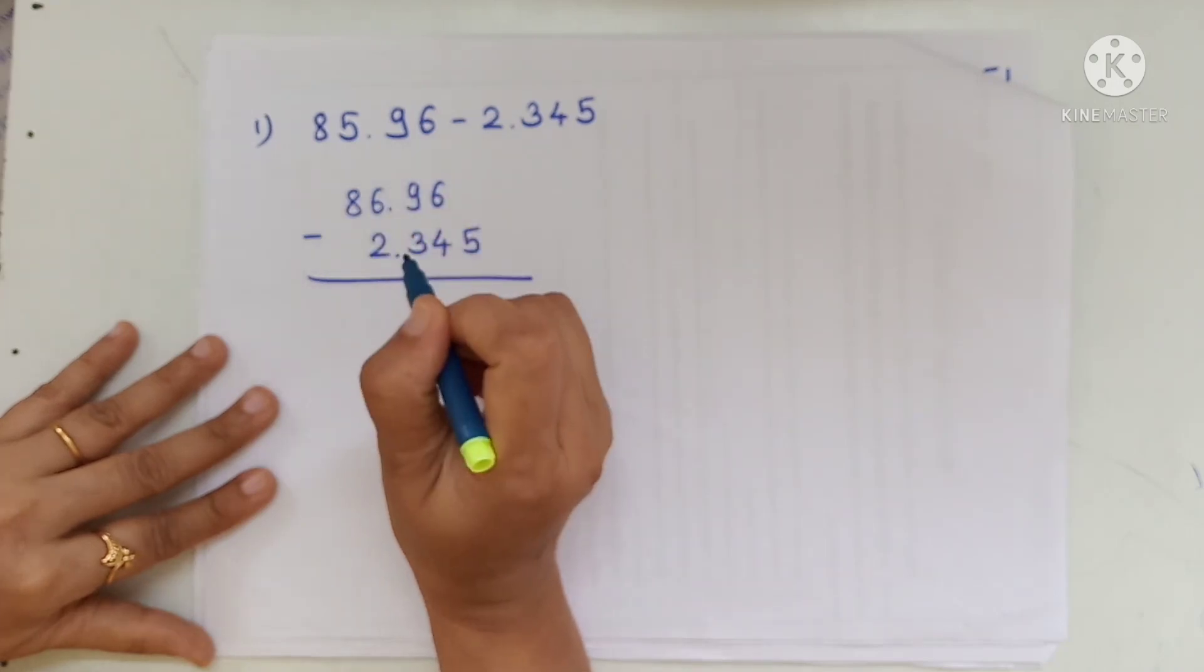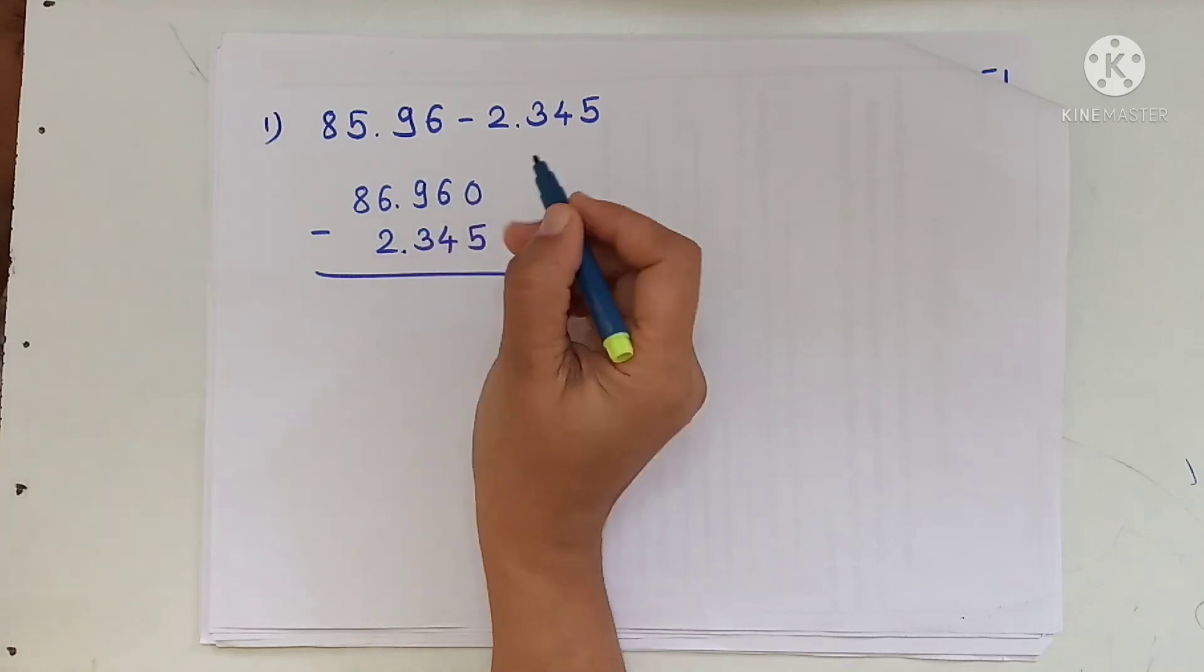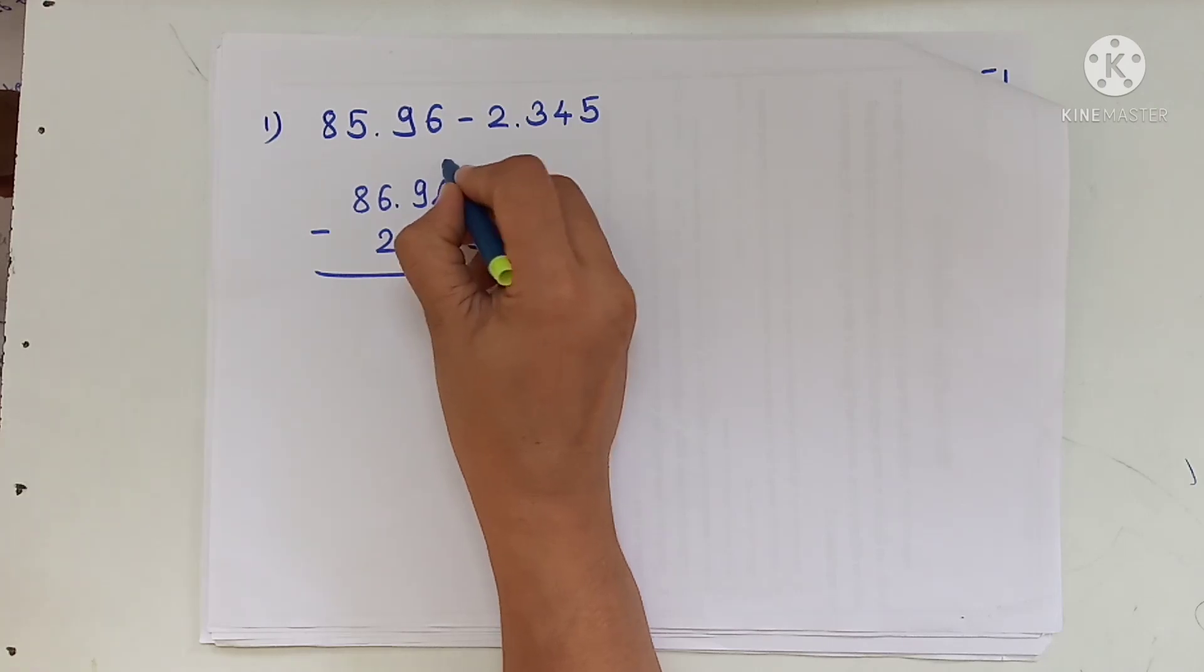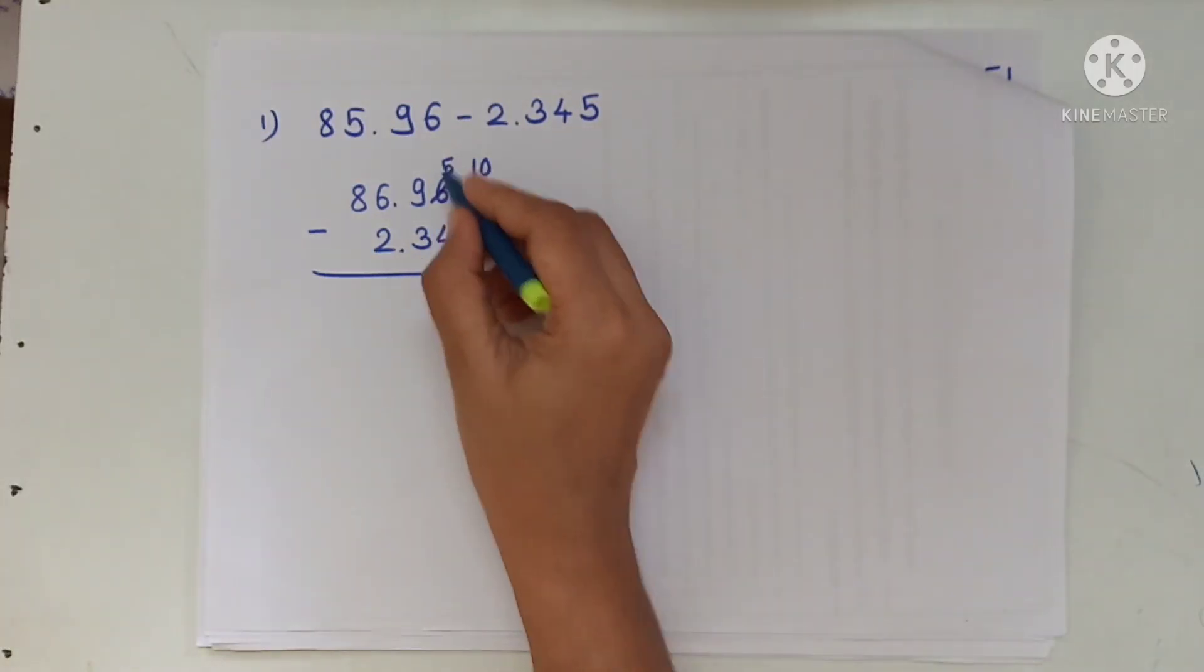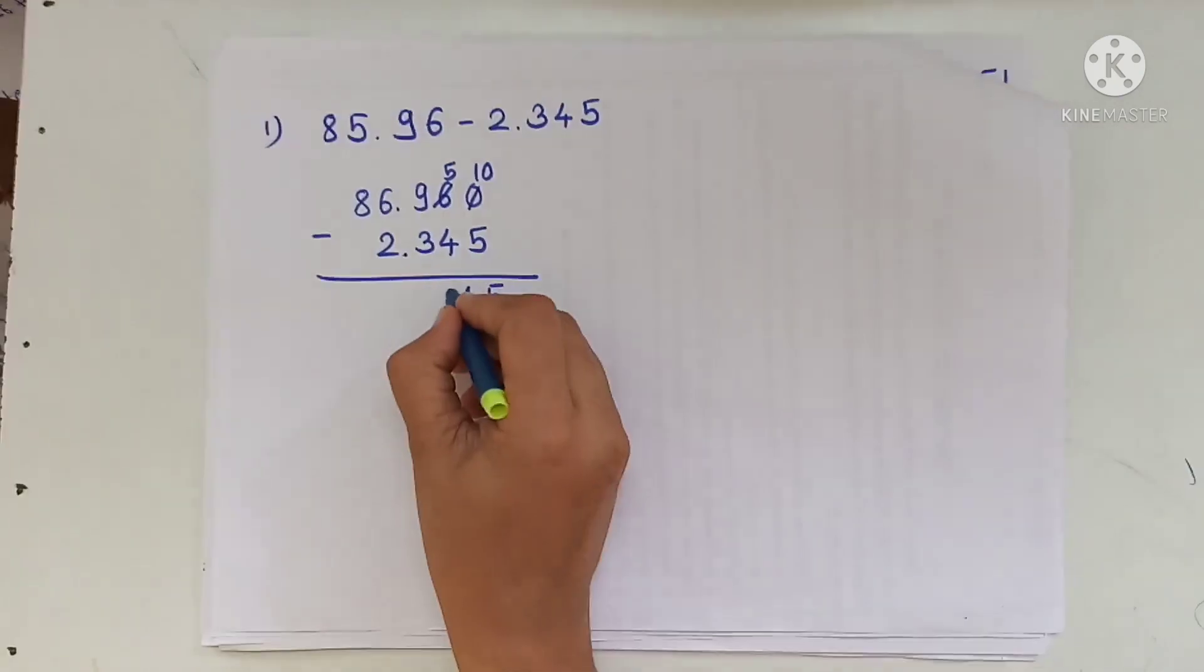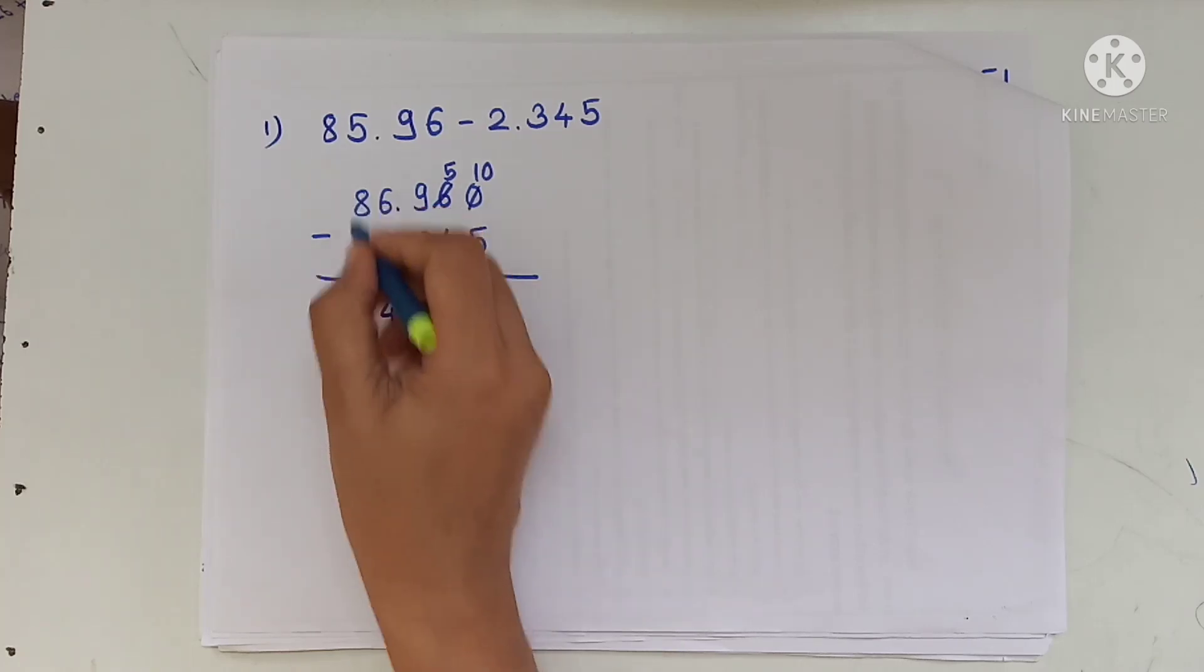Point under point. Here we have 0, so we borrow 1 from here. 5 remains. 10 minus 5 is 5. 5 minus 4 is 1. 9 minus 3 is 6. Point as it is. 6 minus 2 is 4, and 8.